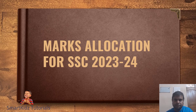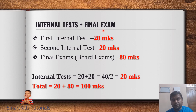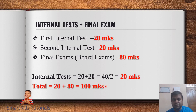You will have internal tests as well as a final examination. There will be two internal tests — one probably in August and the other before Diwali vacations. Your final examination will be in April. The first internal test carries 20 marks and the second also carries 20 marks. The final examination is for 80 marks. The two internal tests total 40 marks (20+20), which are divided by 2 to give 20 marks. So totally, 20 plus 80 equals 100 marks.